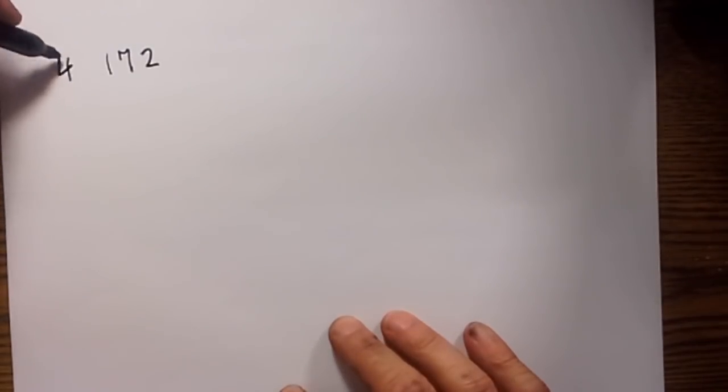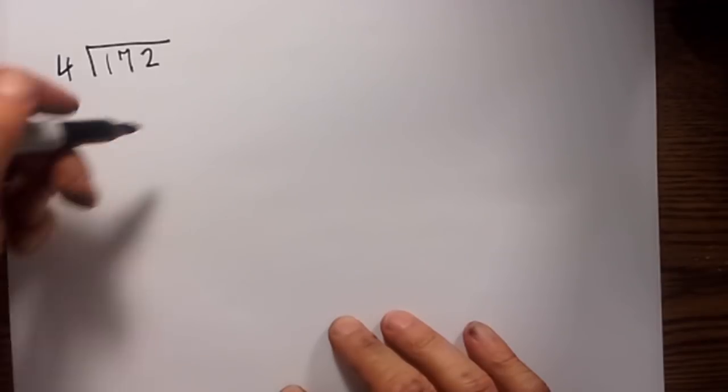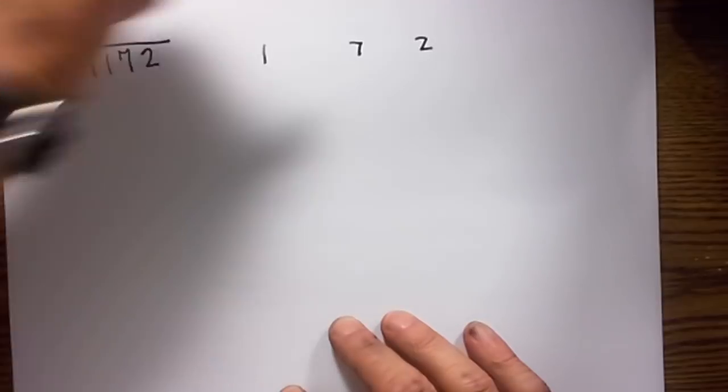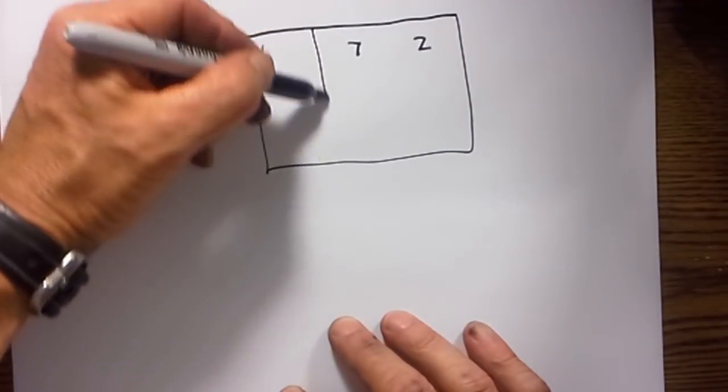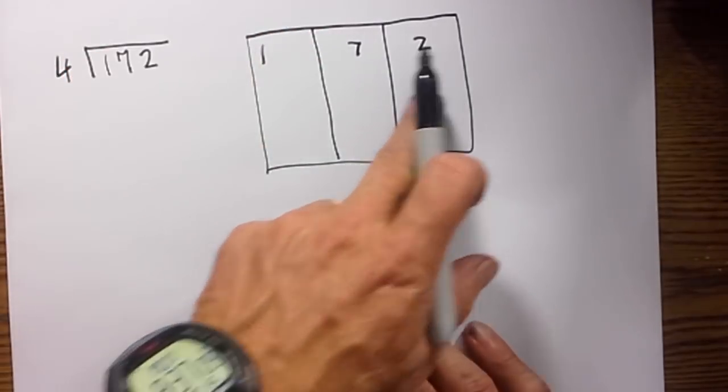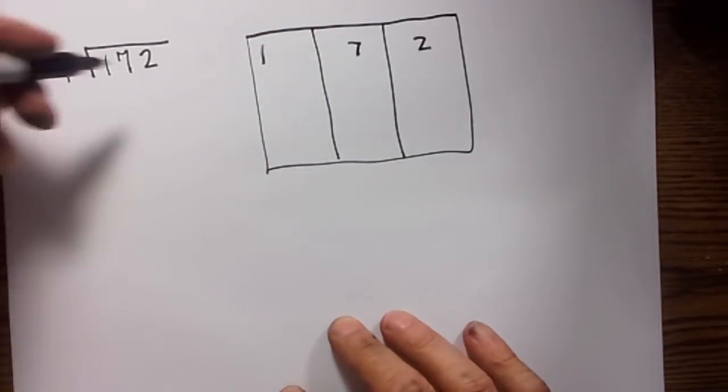Let's start off with a very easy problem. We've got 172 divided by 4. What we do, and this is why it's called the box method, is we set it up a little bit different. Notice how I'm spreading it out. I'll put a little box around this. So we've got one tens and one hundreds. I'll put the four on the outside.